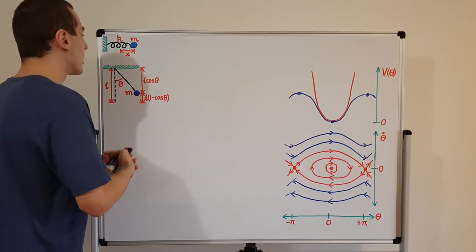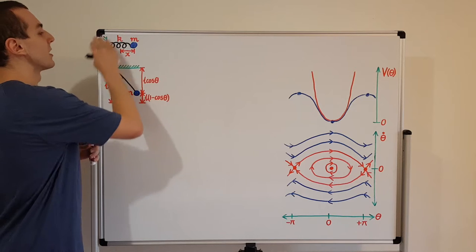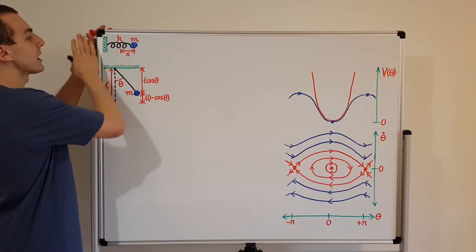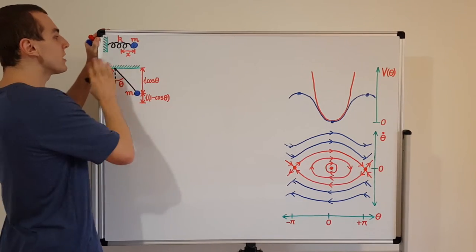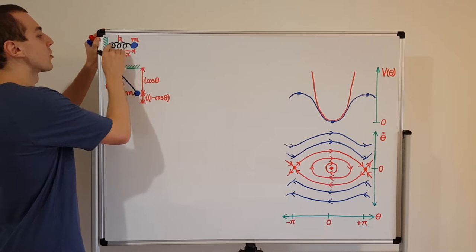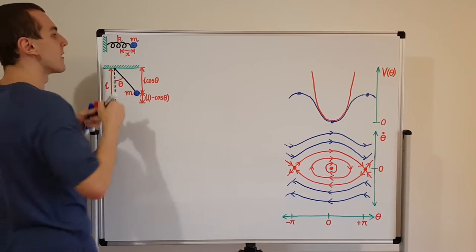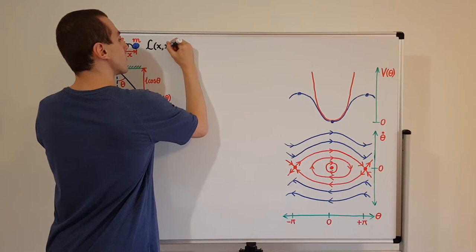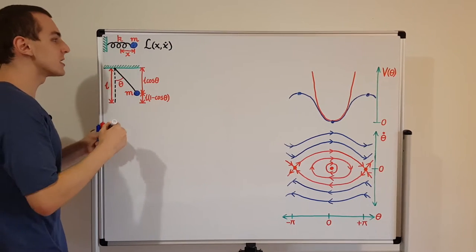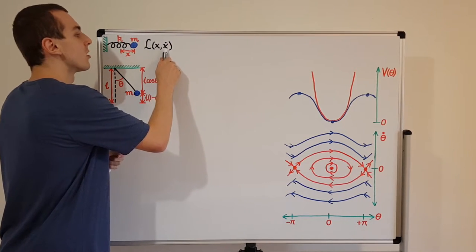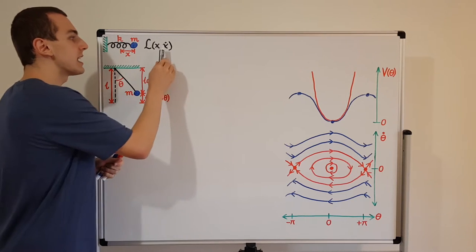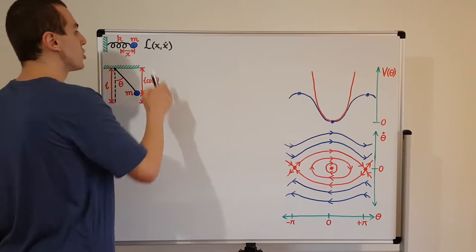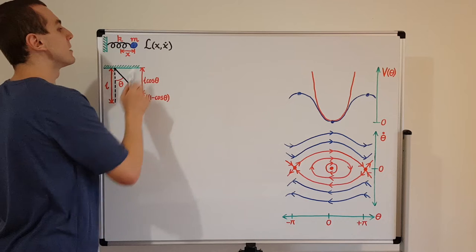Let's write down the Lagrangian of this physical system. This is a one-dimensional system — we're not considering any gravitational force, only the force from the spring. The Lagrangian, denoted fancy L, depends on x and x-dot, where x-dot is the velocity — Newton's dot notation for the time derivative of the position coordinate. These are the two independent variables the Lagrangian depends upon.